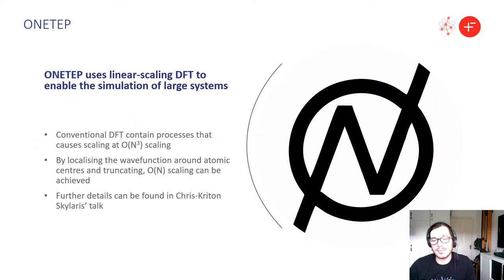In order to simulate an entire graphite nanoparticle we use linear scaling DFT program ONETEP. Typical DFT programs are hard capped in the number of atoms that they can simulate, normally to around a couple hundred or so. This is because they have order N cubed scaling processes. By localizing the wave function around atomic centers and then truncating, ONETEP manages to achieve order N scaling or linear scaling.